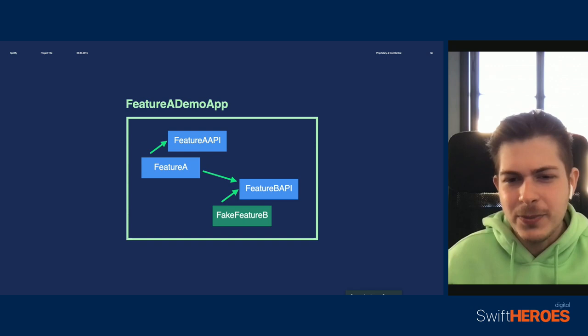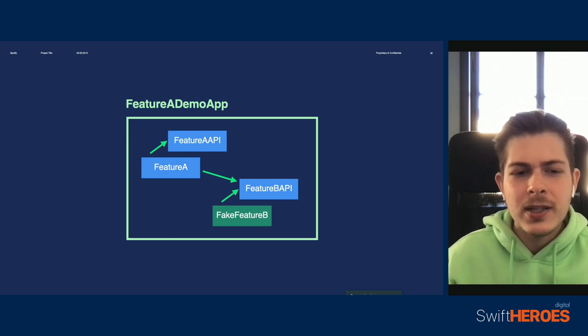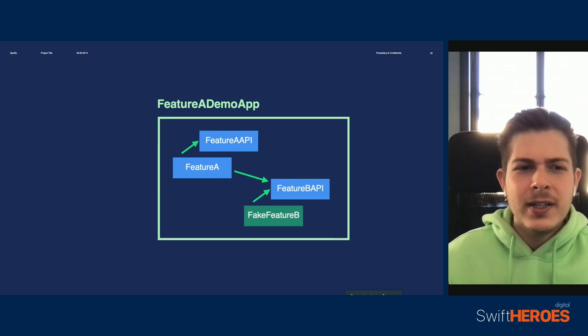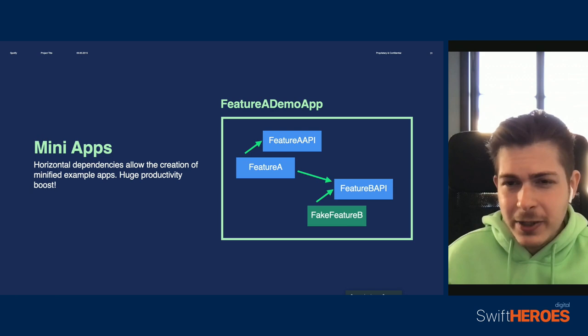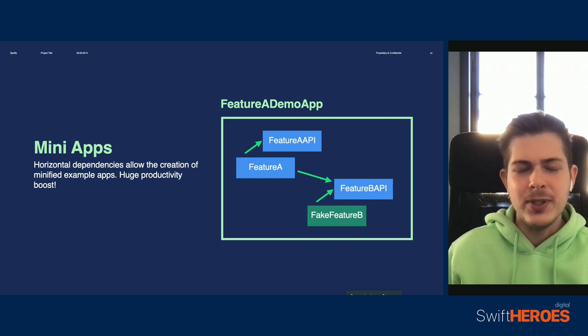We can then use this fake to build a working demo app for feature A that can be built in isolation of the rest of the app. Because we are using the service system, this is actually quite straightforward. When we build a list of services for the service infrastructure, instead of saying that the APIs of feature B are implemented by the actual feature B services, we simply pass some fake objects instead. These minified demo apps are great for developer productivity, especially when clean builds can take well over half an hour. If you don't need the rest of the app to test a particular change, you can replace them with fakes and create a mini app that builds almost immediately.